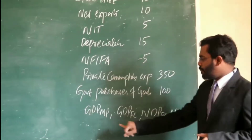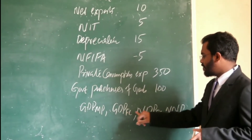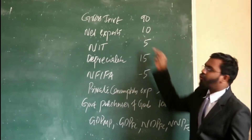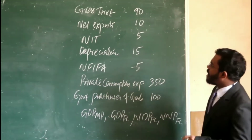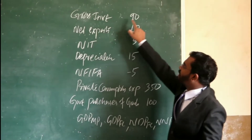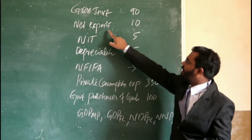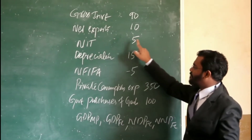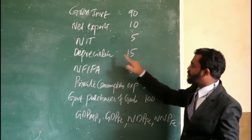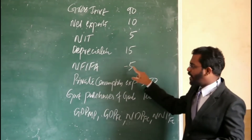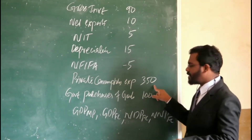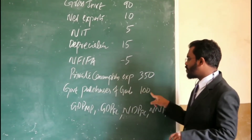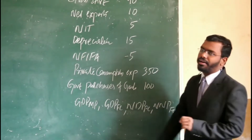First question: calculate GDPMP, GDPFC, NDPFC, and NNPFC from the following information. Gross investment is 90, net export is 10, NIT is 5, depreciation is 15, NFIFA is minus 5, private consumption expenditure is 350, and government purchases of goods and services is 100.